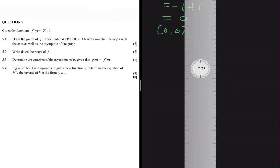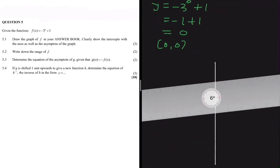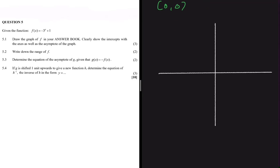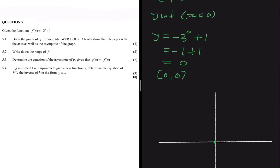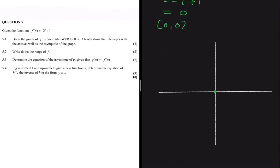So we can go ahead and sketch our graph. Let me put the axes in quickly. We have our axes, and we know we have an intercept at x = 0, y = 0. Let's put our asymptote at y = 1. There goes our asymptote.